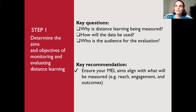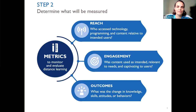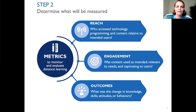Emily elaborates on step two: metrics have been categorized into reach, engagement, and outcomes, which will vary depending on context and modalities. Reach looks at technology devices, infrastructure, and connectivity. Engagement is participation in and use of programming. Outcomes are change in knowledge, skills, attitudes, behaviors, and teaching and learning. The roadmap includes illustrative metrics critical to planning, and notes that measuring quality requires using a combination of all these measures.